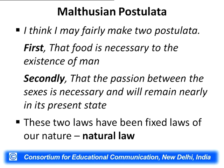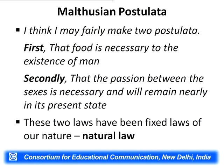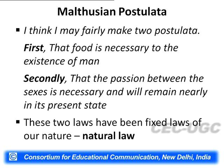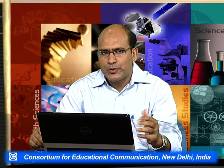Malthus started his theory based on two postulations. He said: 'I think I may fairly make two postulata. First, that food is necessary to the existence of man. Secondly, that the passion between the sexes is necessary and will remain nearly in its present state.' Malthus said that these are two natural laws that have been fixed since humankind has existed. These two natural laws - the need for food and the passion between the sexes - will even remain in the future. But what will happen if these two natural laws persist? Malthus made three propositions on this.